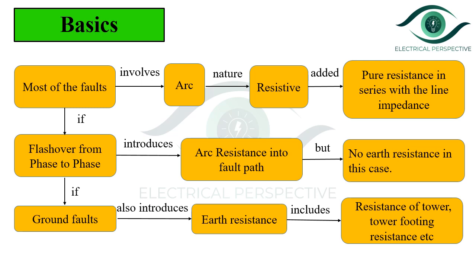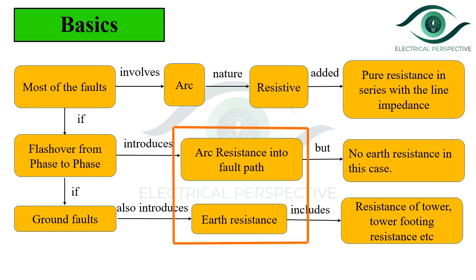The earth resistance and the arc resistance combined together are known as fault resistance. One point should be noted: in case of a phase-to-phase fault, the fault resistance consists of only the arc resistance and there is no earth resistance. But in case of a ground fault, it consists of both arc resistance and earth resistance.